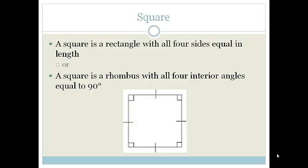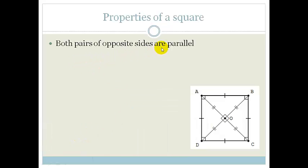Now there are certain properties and again, because it is a very special form of both the parallelogram, the rectangle and the rhombus, it's got all those properties plus it's got its own and you need to learn these. So let's go through them. Both pairs of opposite sides are parallel.